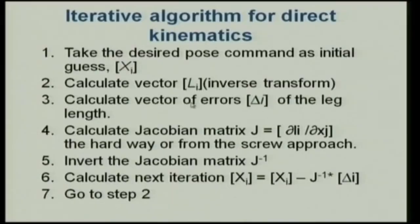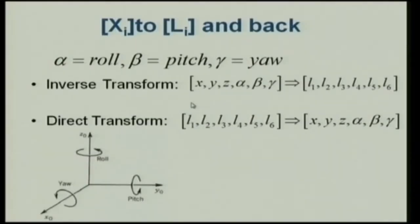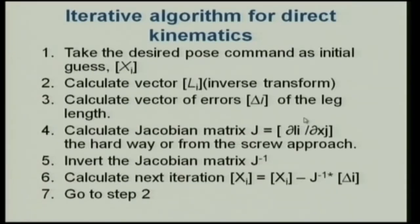Coming back to the direct kinematics problem: I know the leg lengths and want to find the platform pose. I start by assuming a pose, calculate the leg lengths from that assumption, and get an error because the assumed position will not match the actual leg lengths measured by encoders on the legs.